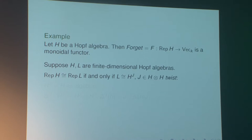The twist of H is H as an algebra, but one modifies the comultiplication by conjugating by an invertible element J.